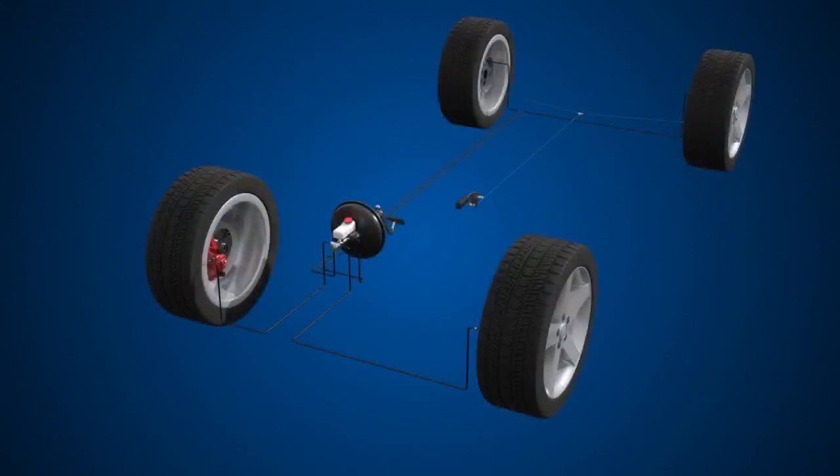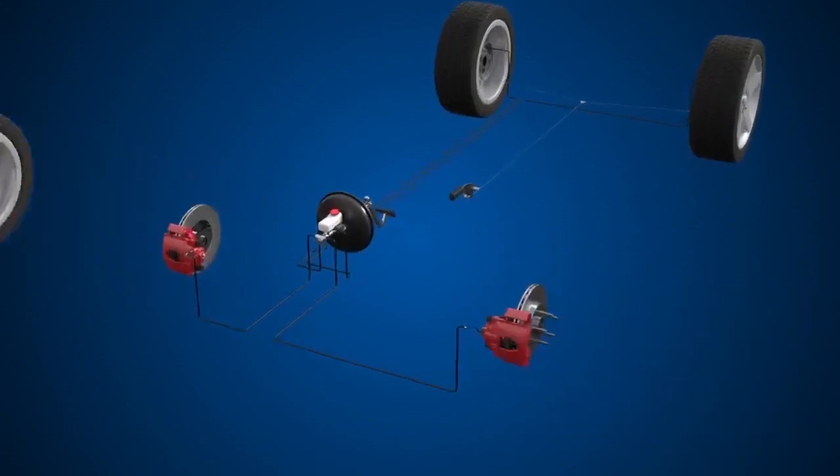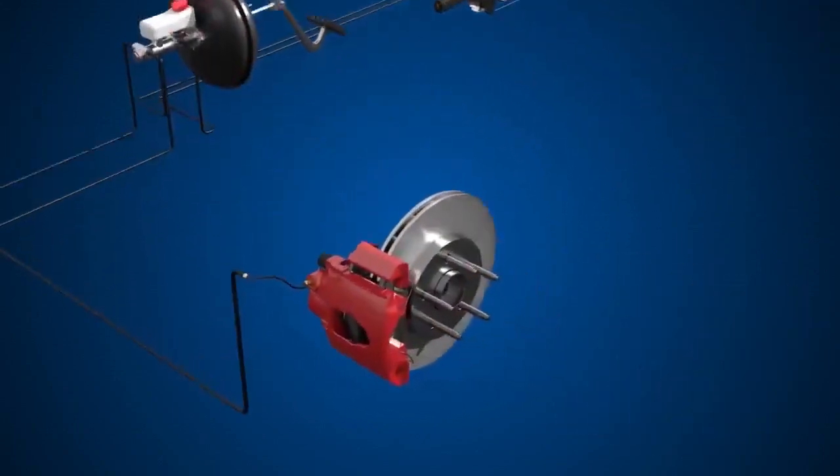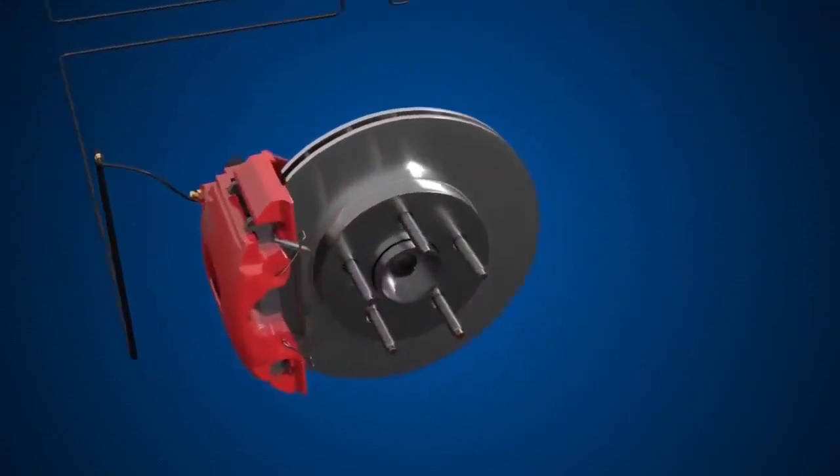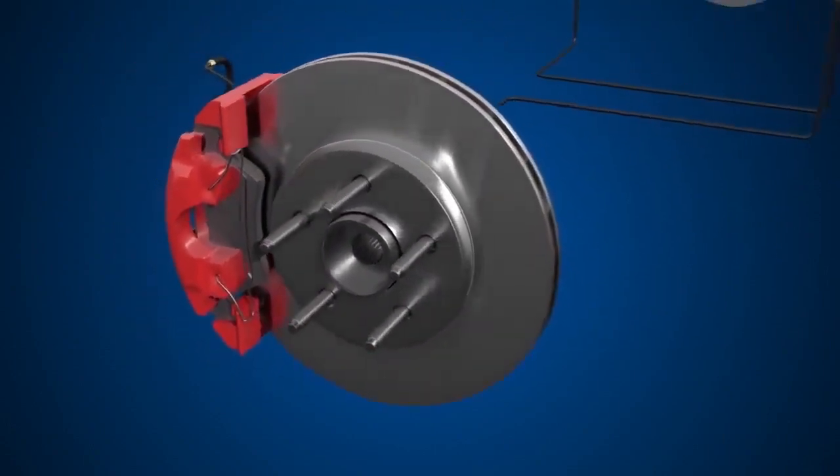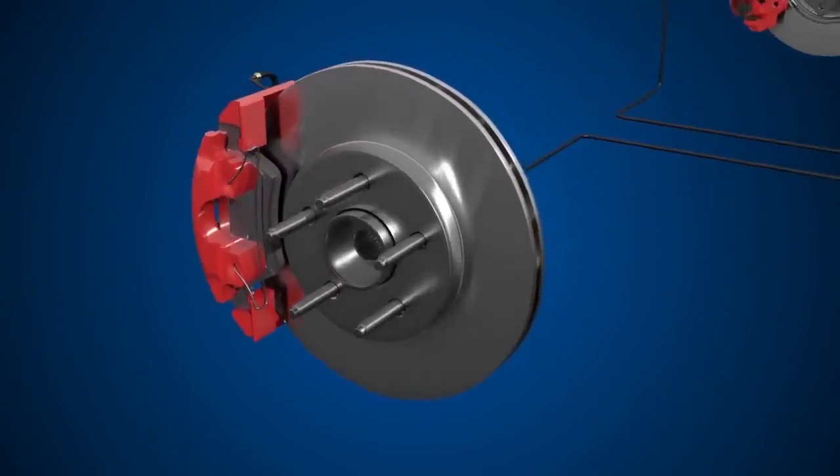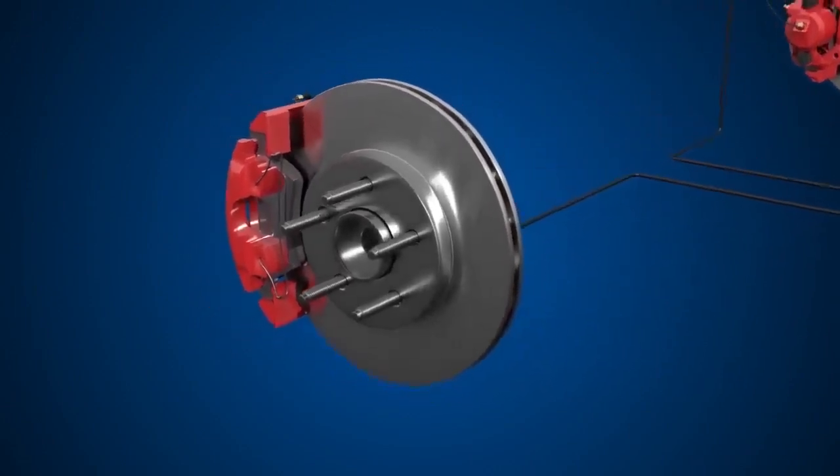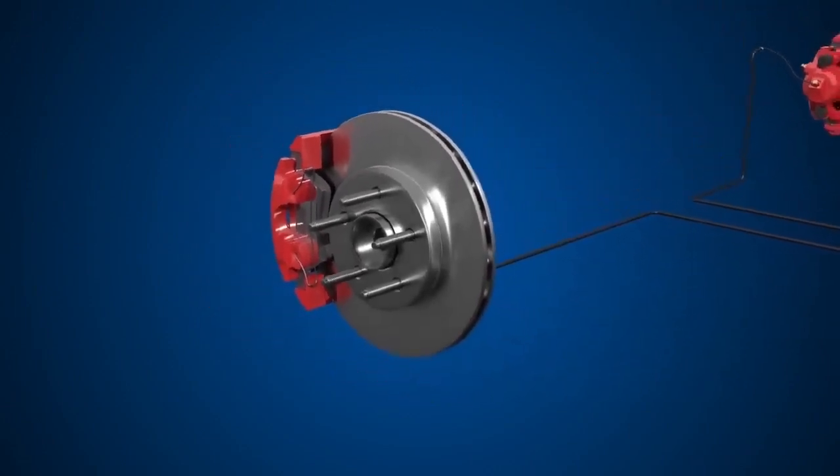Now, let's take a look at a light vehicle braking system. At the front of our vehicle, we have disc brakes. They use calipers to squeeze a pair of brake pads against a brake disc, creating friction. The friction generated converts kinetic energy into heat, slowing the wheel.